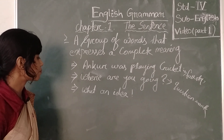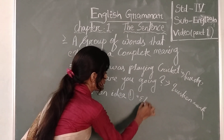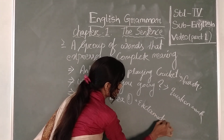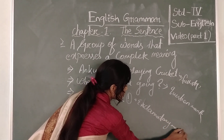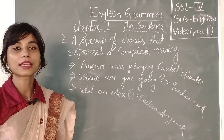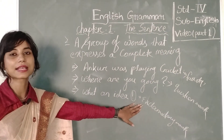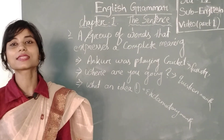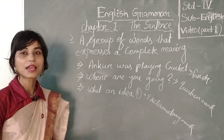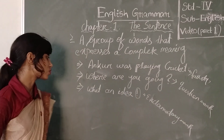One more thing — look at the third example: 'What an idea!' Here I have put a sign and this sign is called an exclamatory mark. So these three important signs are: full stop, question mark, and exclamatory mark. An exclamatory sentence expresses a strong or forceful emotion, such as anger, surprise, or joy. In such sentences we use the exclamatory sign.